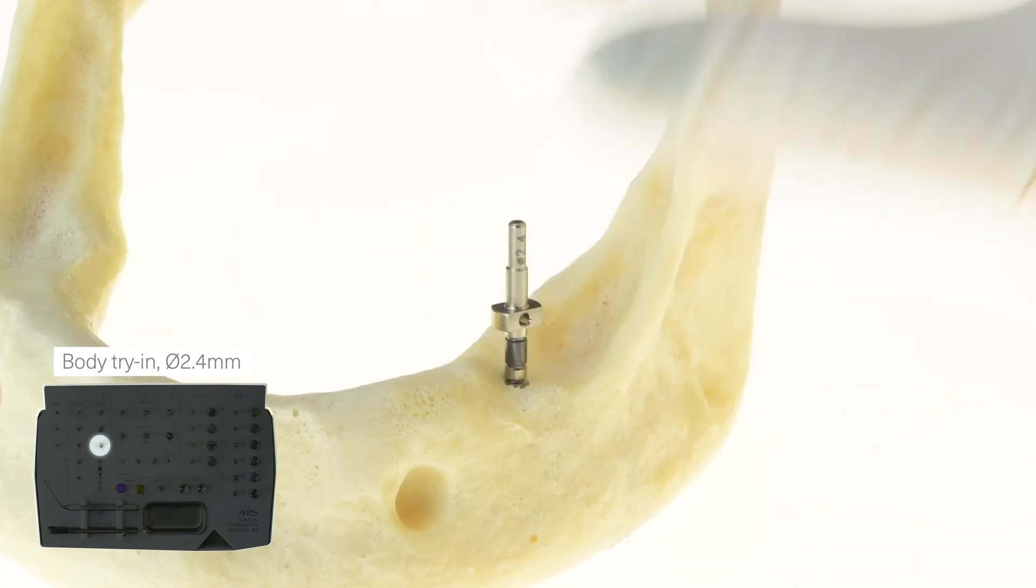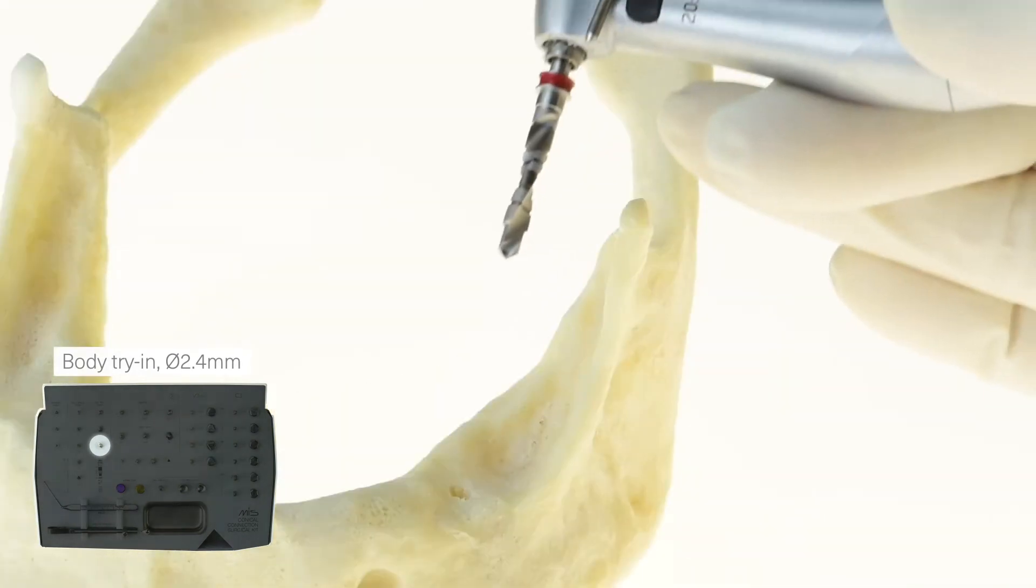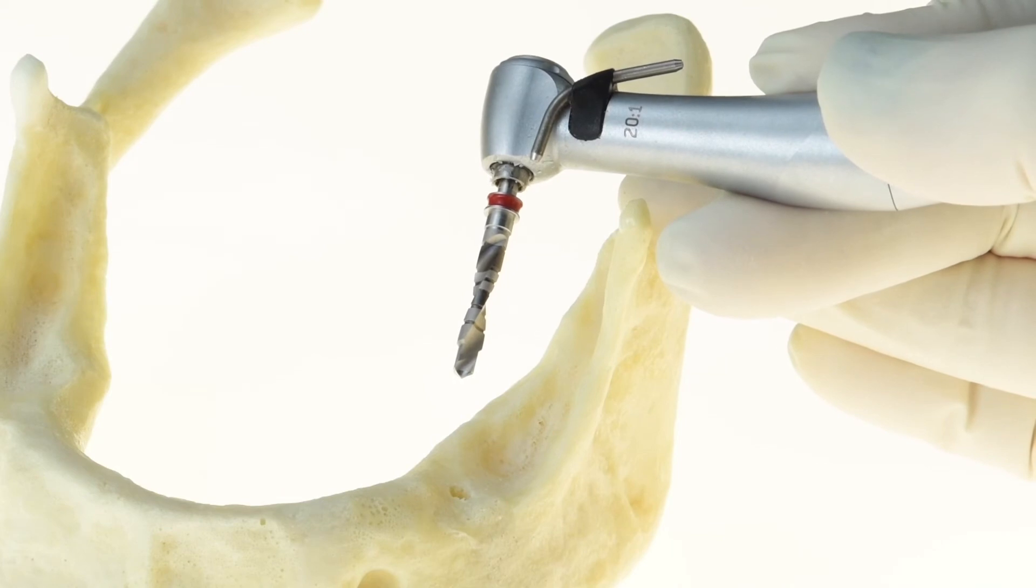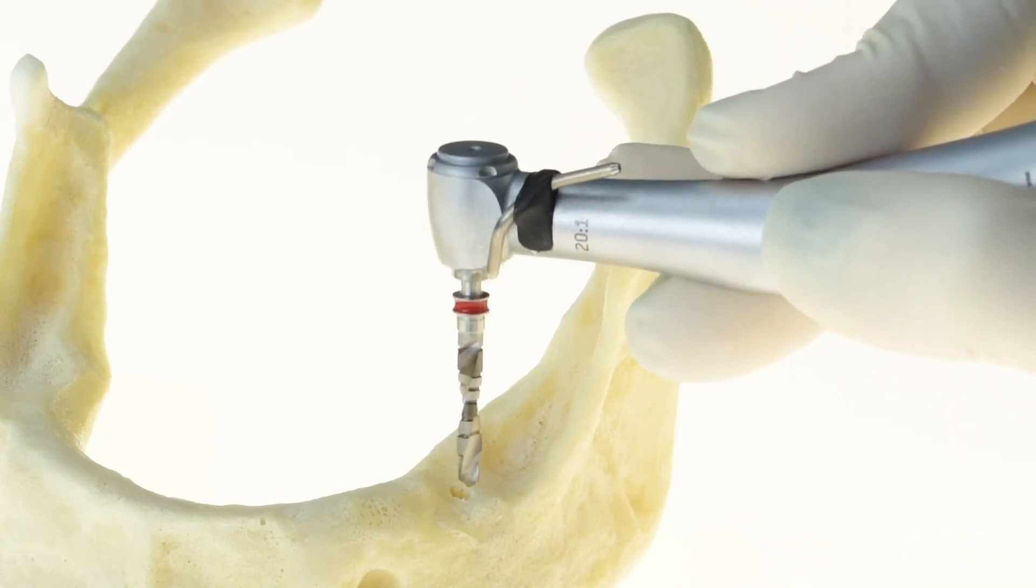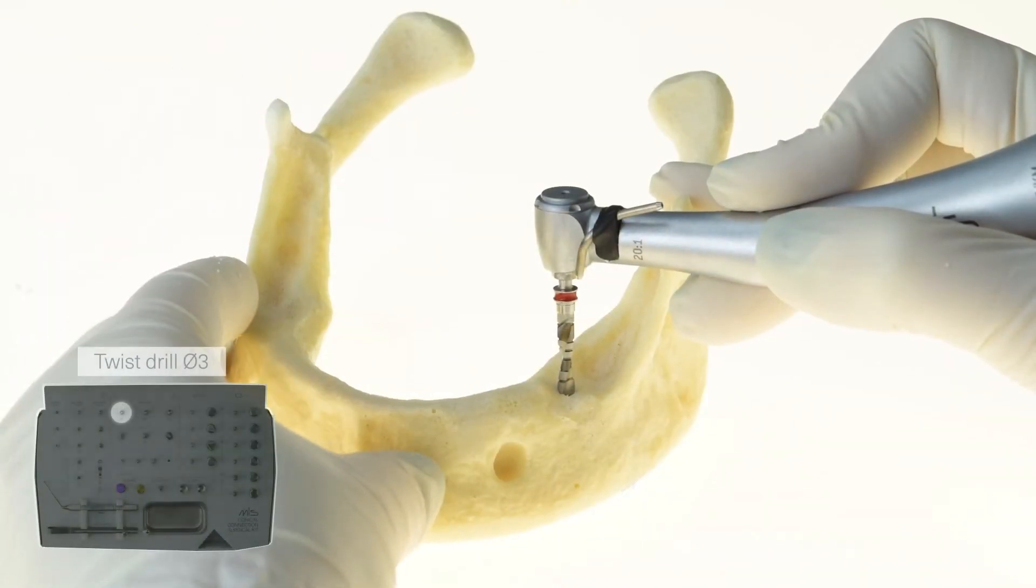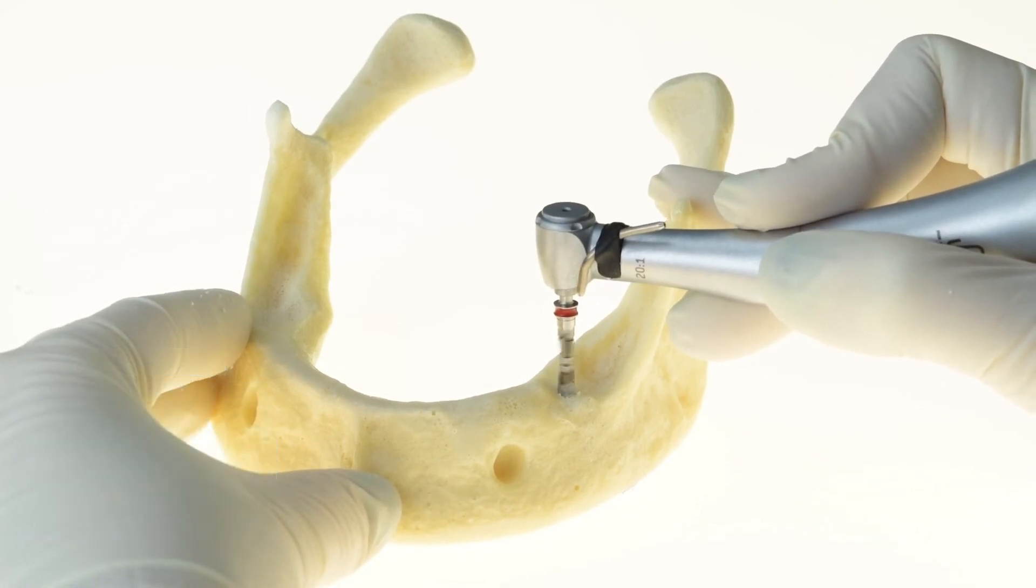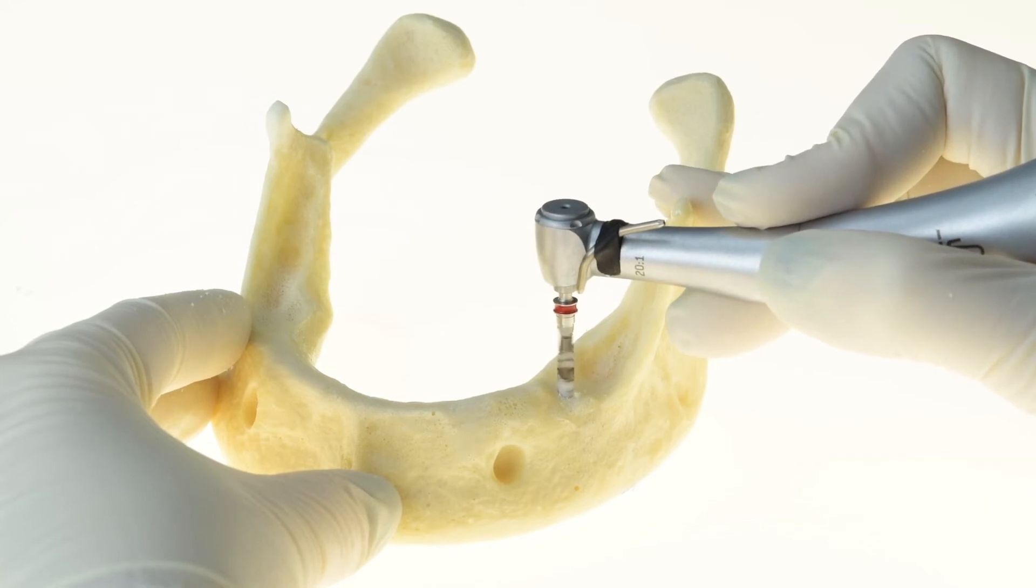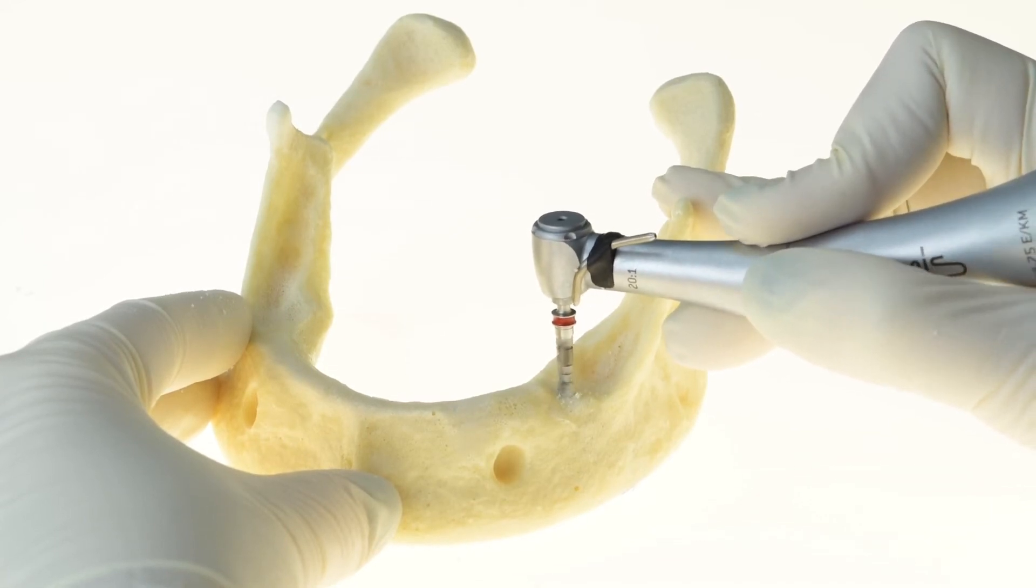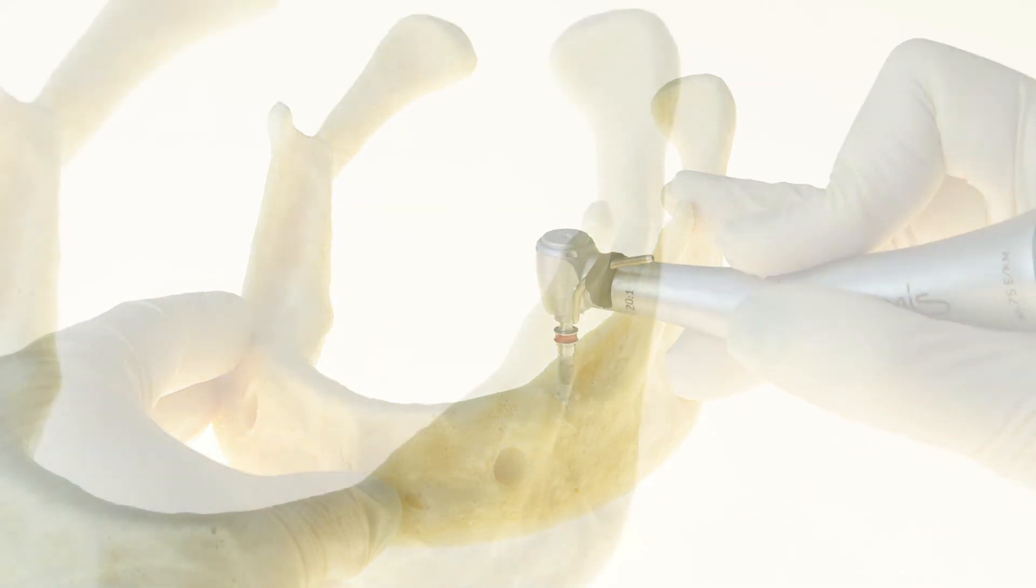Once finished using the pilot drill, a body try-in is used to test the depth. After measuring the depth, we continue to the step drill, drilling until the correct marking. The tip of this drill includes a step which is the same diameter as the previously used drill. This provides a more precise positioning of the drill inside the osteotomy and a more accurate drilling procedure overall.